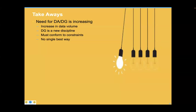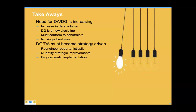As we get ready for our Q&A session, here are key takeaways: the need for data architecture and data governance is increasing as data volume increases. Data governance is a relatively new discipline — colleagues like Laura Madison and John Ladley are questioning whether it's working in its current state, and I'd encourage you to look up their work. Either way, we need to conform to constraints. Data architecture must become strategy driven. Re-engineer components of both your data architecture and IT architecture as a result of your data governance activities, driven opportunistically. Practice quantifying strategic improvements, and turn this into a programmatic implementation. Douglas Hubbard's book 'How to Measure Anything' is a wonderful resource I've found super inspirational.